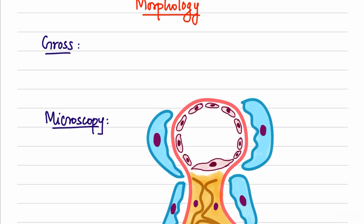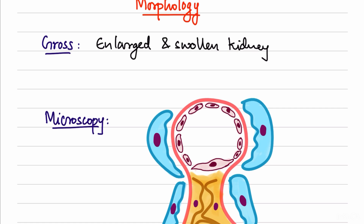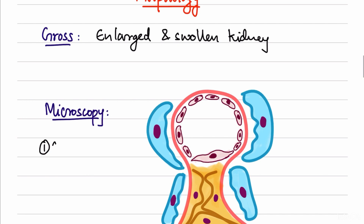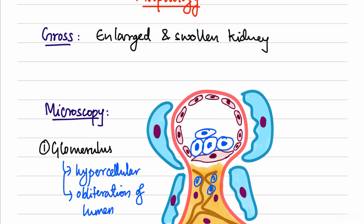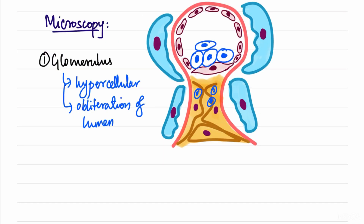Moving to morphology: the glomerulus is hypercellular, so the kidneys will be enlarged and swollen. Under light microscopy, we observe enlarged hypercellular glomeruli with proliferating endothelial cells and glomerular matrix, leukocytic infiltration in the mesangium, and obliteration of the lumen due to endothelial proliferation. These are the two main glomerular changes in post-streptococcal glomerulonephritis.